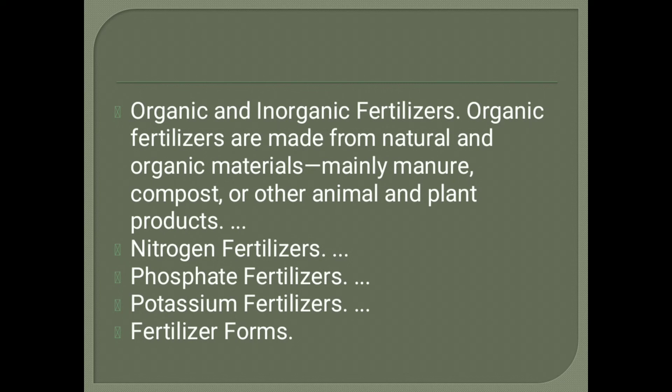Different types of fertilizers include organic and inorganic fertilizers. Organic fertilizers are made from natural and organic materials, mainly manure, compost, or other animal and plant products. Other types include nitrogen fertilizers, phosphate fertilizers, and potassium fertilizers.